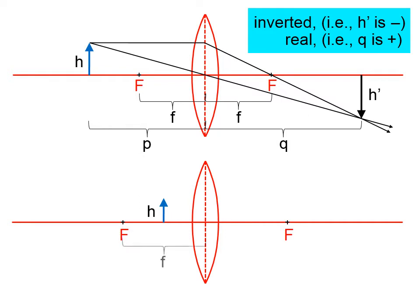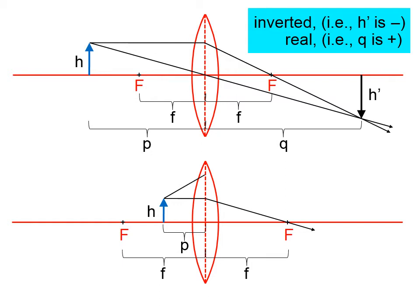Let's try the next one. Again, we have the height h and we have the focal length. Focal length is indicated by little f; focal point is indicated by capital F. Here we see that the object distance is less than the focal length. Rule number one says go in parallel to the principal axis and refract through the focal point. Rule number two says line up the tip of the object with a focal point and head towards the lens, then refract out parallel to the principal axis.